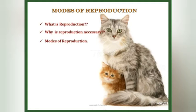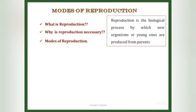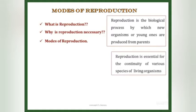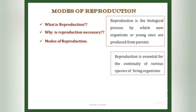The first topic is modes of reproduction. Before entering this topic, let's see what reproduction is and why it is necessary. Reproduction is a biological process by which new organisms or young ones are produced from parents. Reproduction is necessary for the continuity of various species of living organisms. If organisms do not reproduce, the species will not exist for a long time and may soon get extinct.